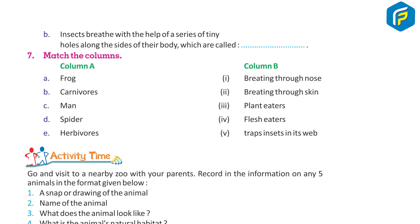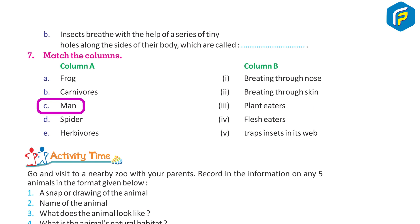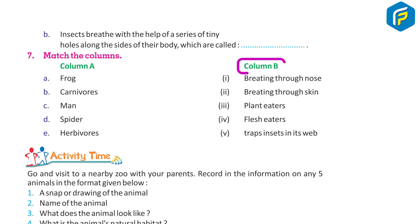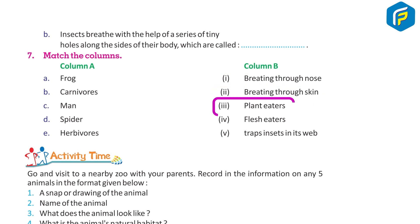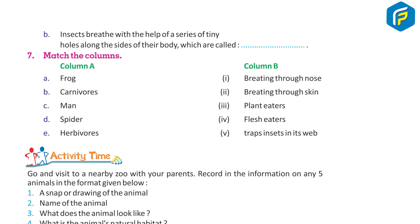Match the column. Column A: A. Frog, B. Carnivores, C. Man, D. Spider, E. Herbivores. Column B: 1. Breathing through nose, 2. Breathing through skin, 3. Plant eaters, 4. Flesh eaters, 5. Traps insects in its web.